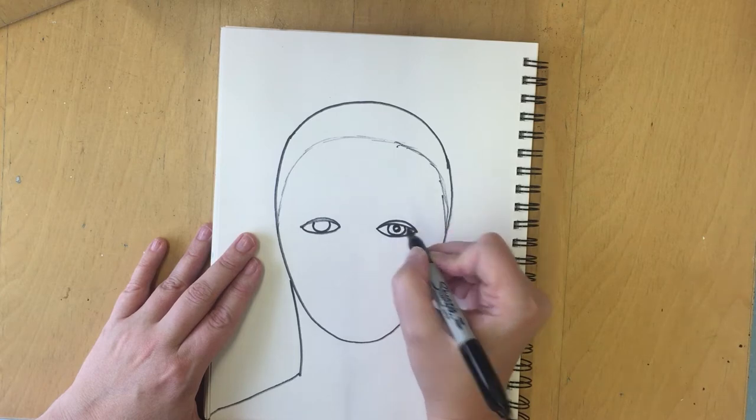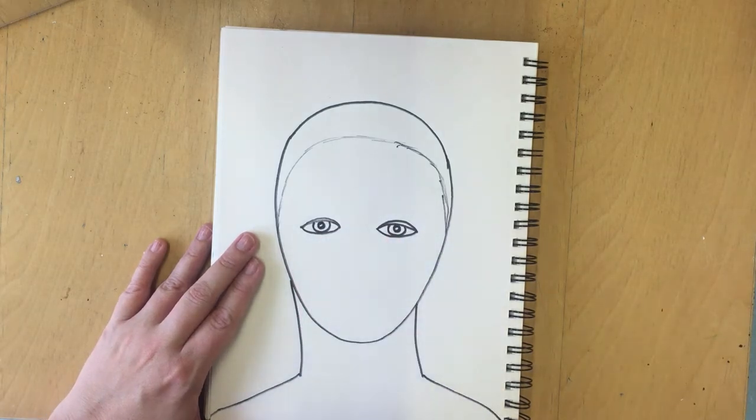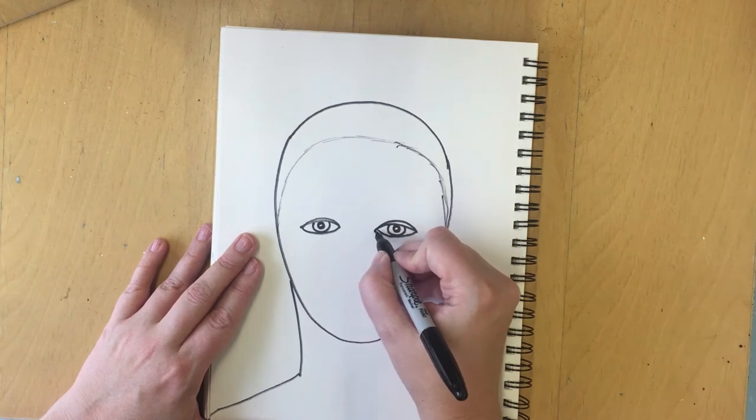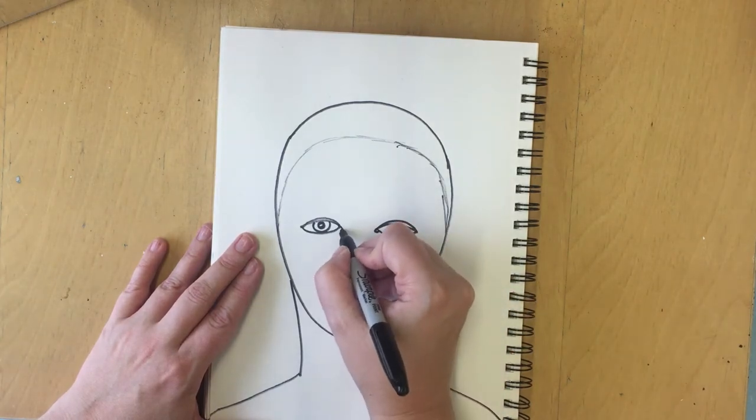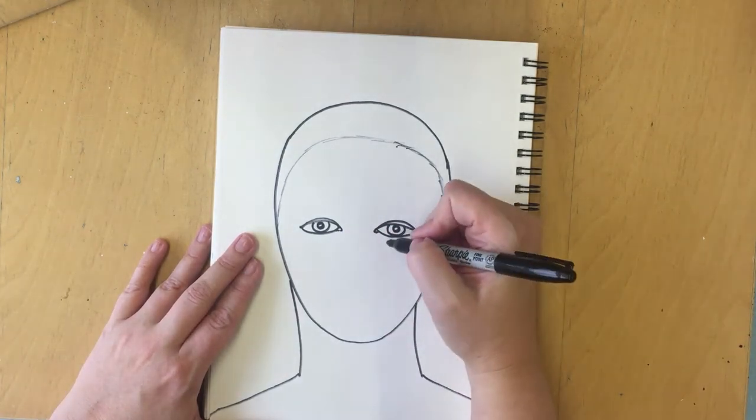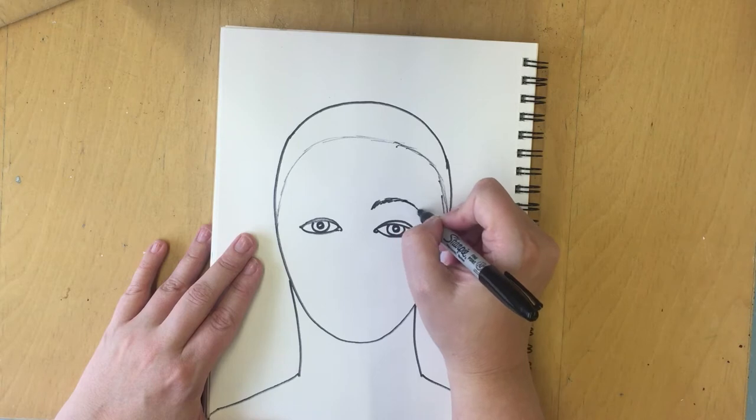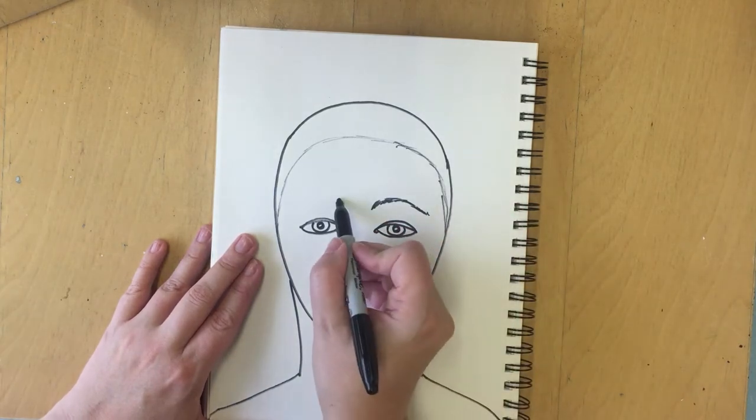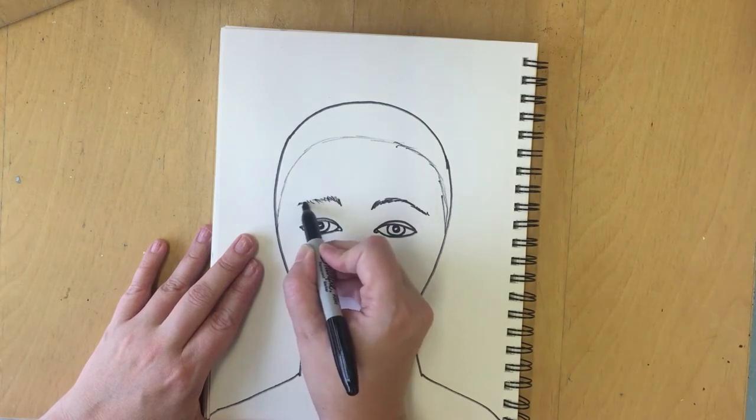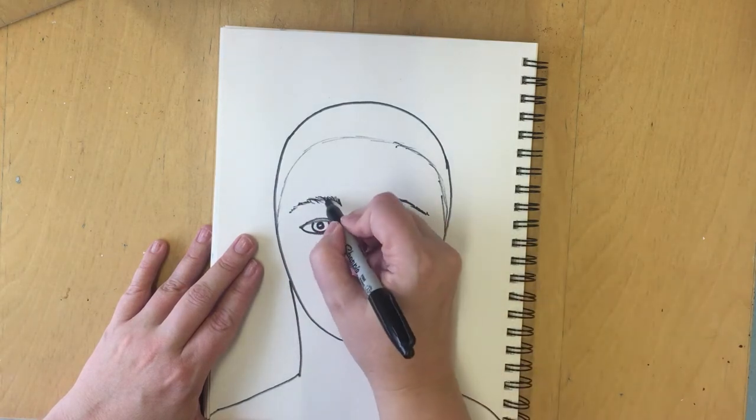Inside the iris we're going to draw a pupil. That's the black circle inside your eye. I'm leaving a little white dot in the center so it looks like the light is reflecting off of my pupil. And when I look really close, I notice that I have two little curved lines on the inside of my eye. The next thing I'm noticing is that my eyebrows kind of come up, and they're all little lines that go above my eye. Your eyebrows might be a different shape or might look a little bit different than mine, so draw what you see.